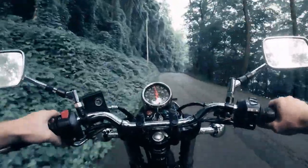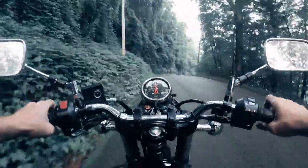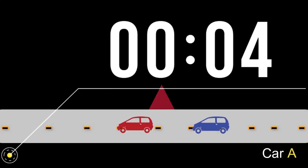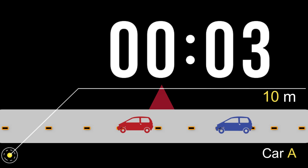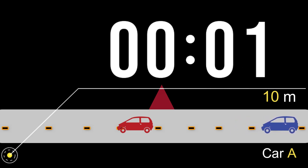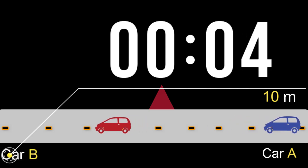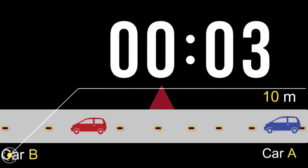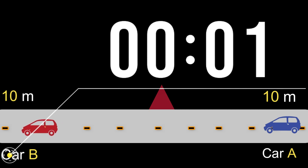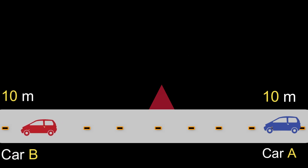Can you tell me an example? If car A moved 10 meters backward every 5 seconds, and car B moves 10 meters forward in 5 seconds, the speed of both cars is still 10 meters per 5 seconds.